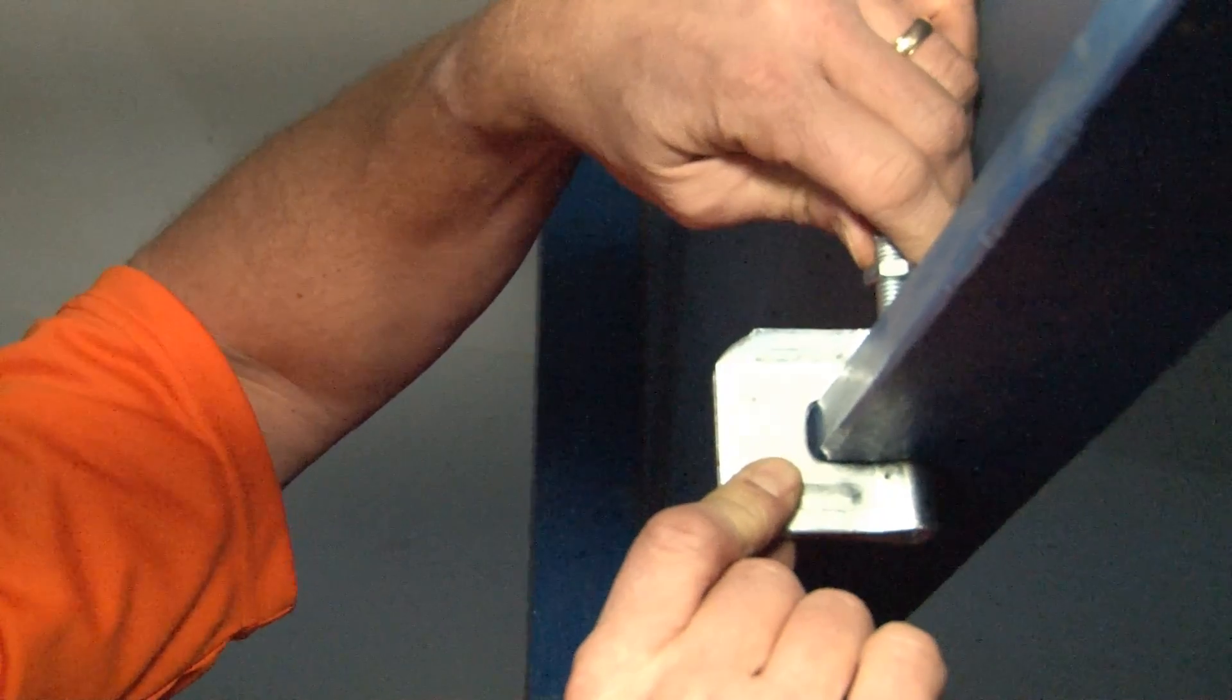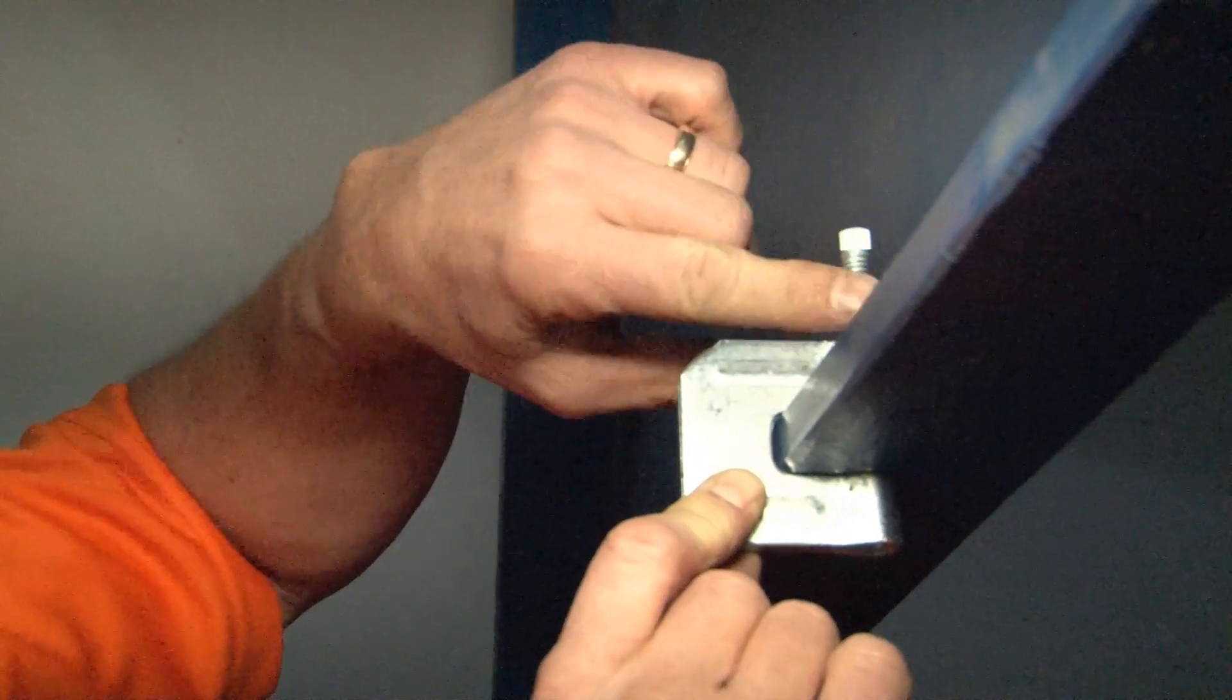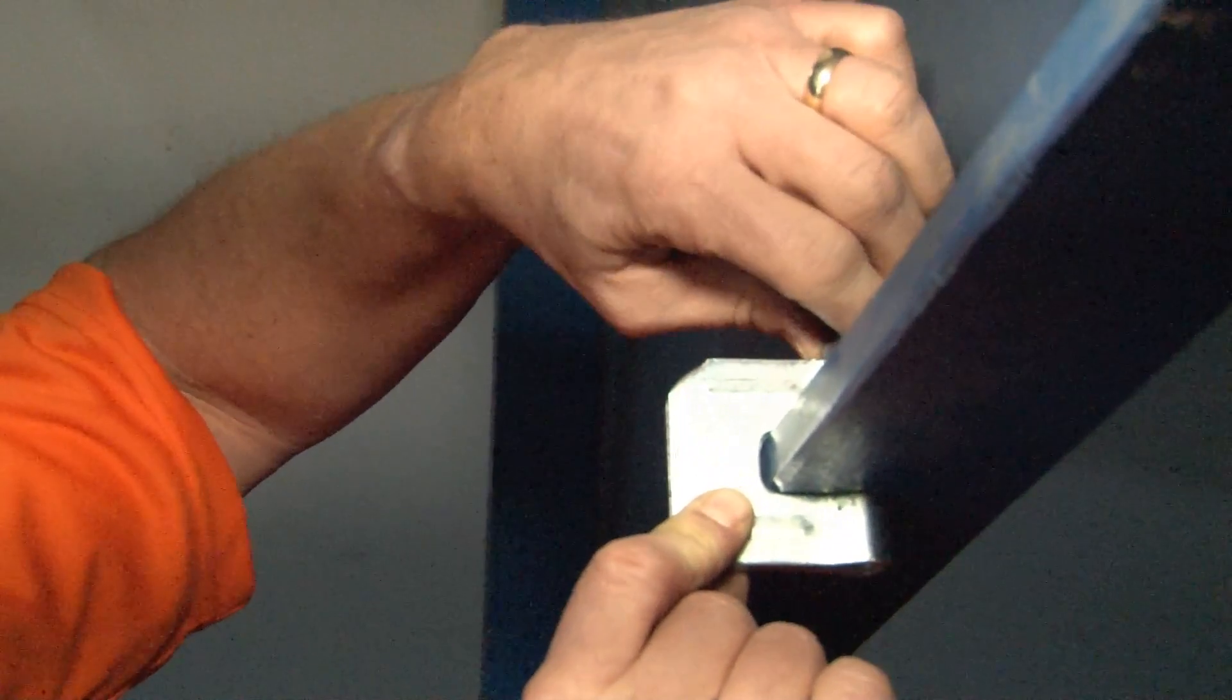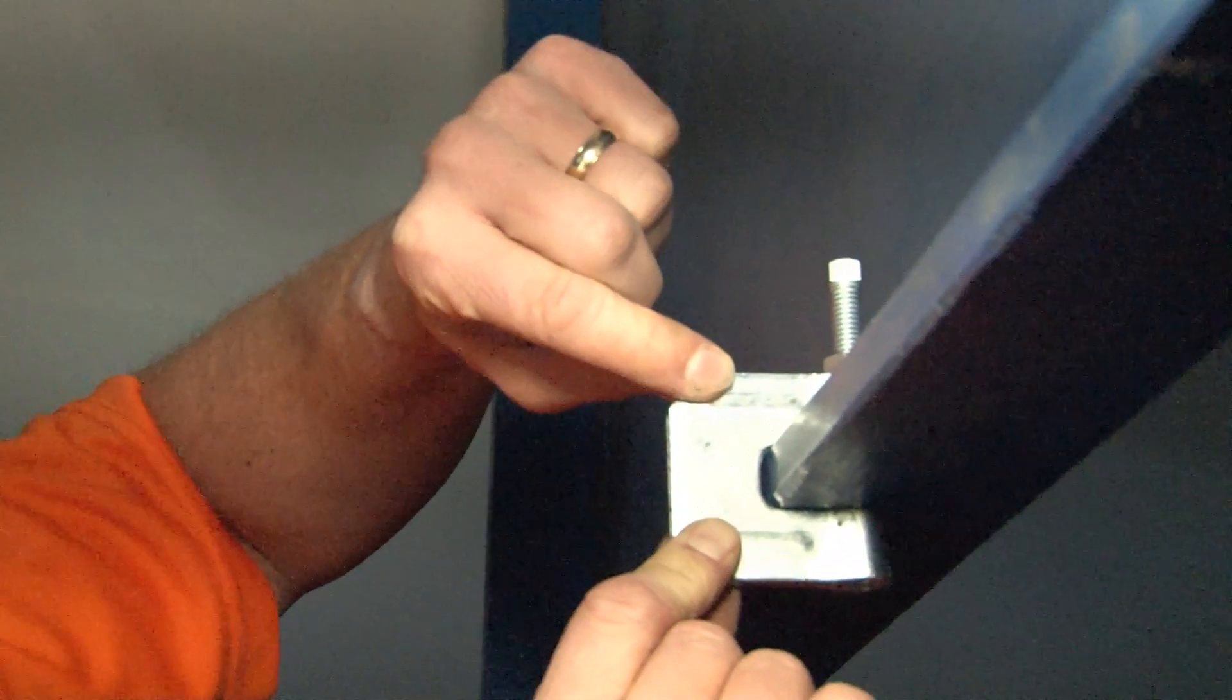Make sure you get it nice and tight for a solid install. At this point, you want to secure the jam nut down to the top of the clamp to prevent any vibratory loosening that may occur in the building over time.